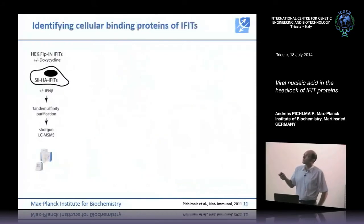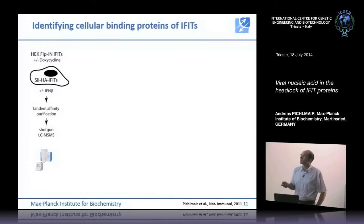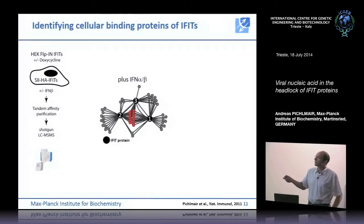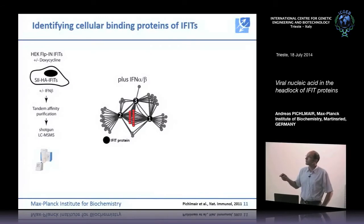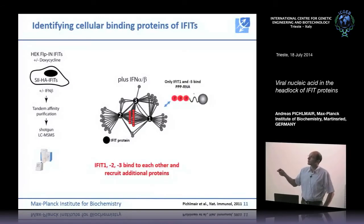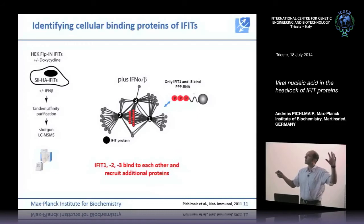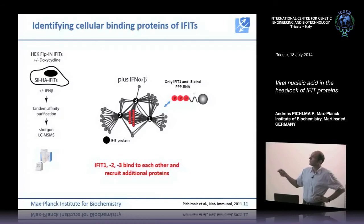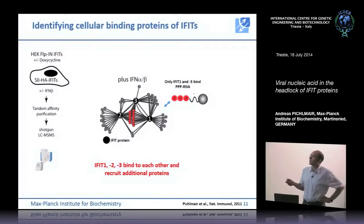To cut a long story short, we did a mass spec approach expressing different IFIT proteins in HEK cells, treated with type 1 interferon, and performed tandem affinity purification. We found that IFIT proteins form a very tight complex consisting of IFIT1, 2, and 3, engaging additional proteins. Within this complex, only one IFIT protein — IFIT1 — can directly bind to PPP RNA, and complex formation only occurs in the presence of type 1 interferon. The entire PPP RNA precipitates IFIT1, 2, and 3 together, which is why they were all identified by mass spec, but individually only IFIT1 binds PPP RNA.